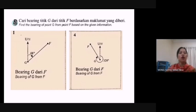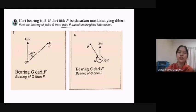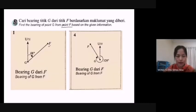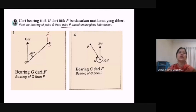Now find the bearing of point G from point F based on the given information. Since it is from point F, you draw a compass direction pointing north at F. Make sure that the north arrow is parallel to the original north line — these two lines must be parallel.